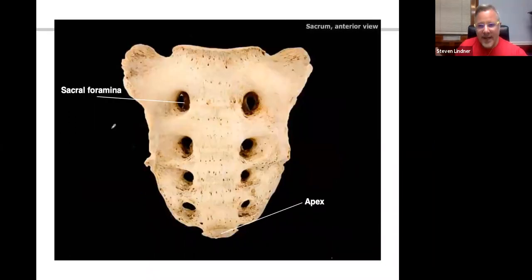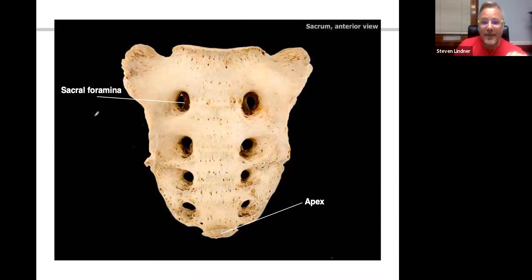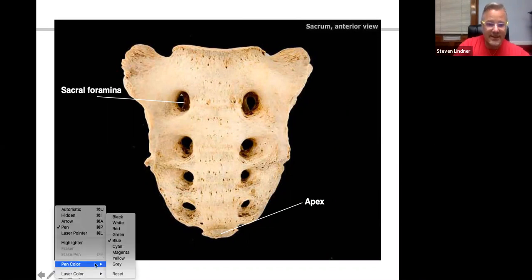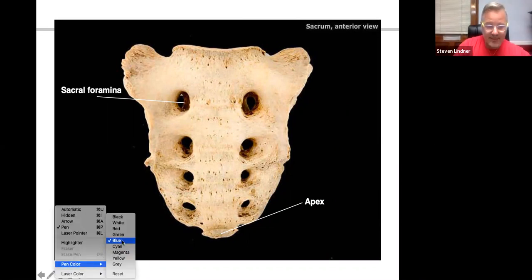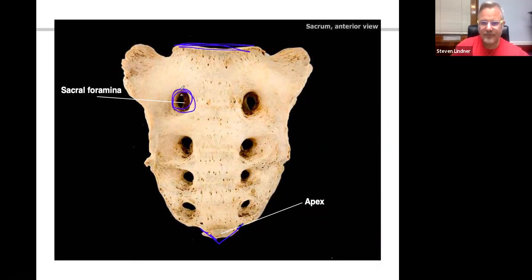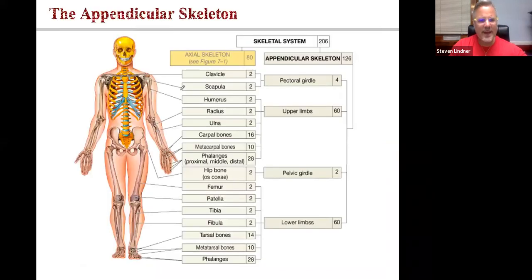The sacrum has sacral foramina — holes — and the base of the sacrum (sacral base) is on top, while the sacral apex is at the bottom.